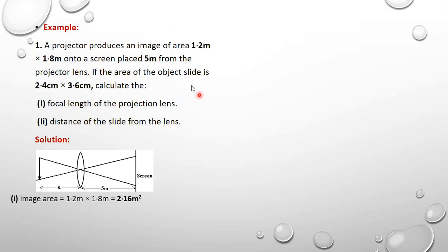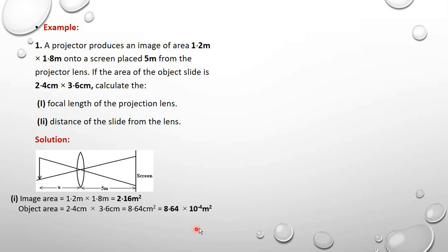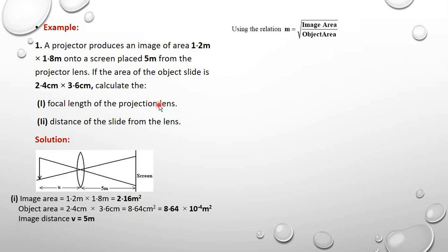The area of the object slide is 2.4 × 3.6 centimeters. I have to change it to meters by multiplying by 10⁻⁴, so I get 8.64 × 10⁻⁴ m². V is given as 5 meters. Now we know the formula: magnification = √(image area / object area), which is also equal to V/F − 1, which is also equal to V/U.